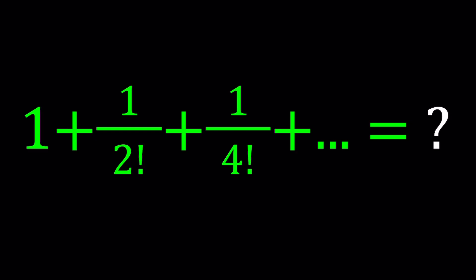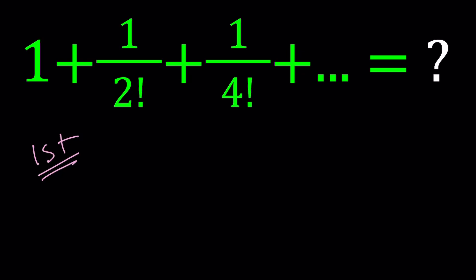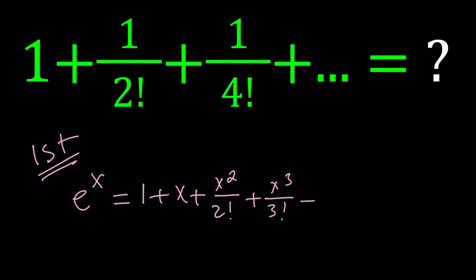Let's start with the first method. If you've seen any factorial sums, you'll probably recognize Euler's number — e to the power x, the exponential function which has Euler's number as its base. We can write functions besides polynomials as infinite polynomials, and that's called Taylor series. E to the x can be written as: 1 plus x plus x squared divided by 2 factorial plus x cubed divided by 3 factorial, and so on. You could also write this with sigma notation: x to the power n divided by n factorial, with n from 0 to infinity.